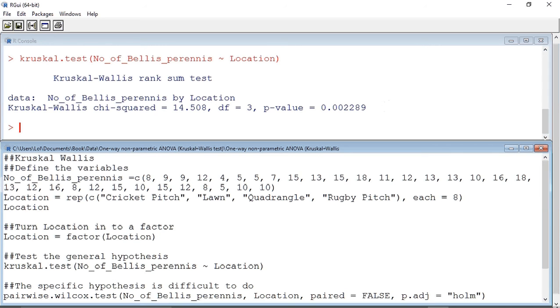So to counter this, I have used the Holm method to adjust the p-value and make type 1 errors less likely. So let's run the test.